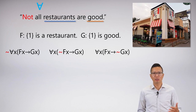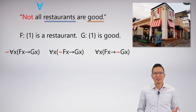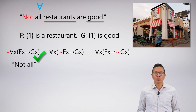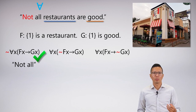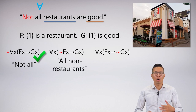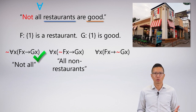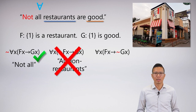For the first option, the negation is next to the universal — this means 'not all.' It's not all Fx arrow Gx. That definitely seems to capture the meaning of 'not all restaurants are good.' The middle option is strange: I put the negation in the group, so this says 'everything that is not a restaurant is good' — all non-restaurants are good. But that doesn't capture the meaning at all, because I don't know anything about a rock or a car, since those are non-restaurants. That cannot be the right symbolization.